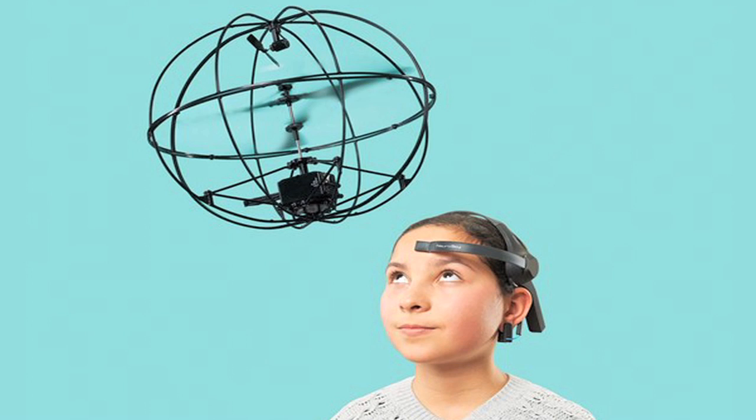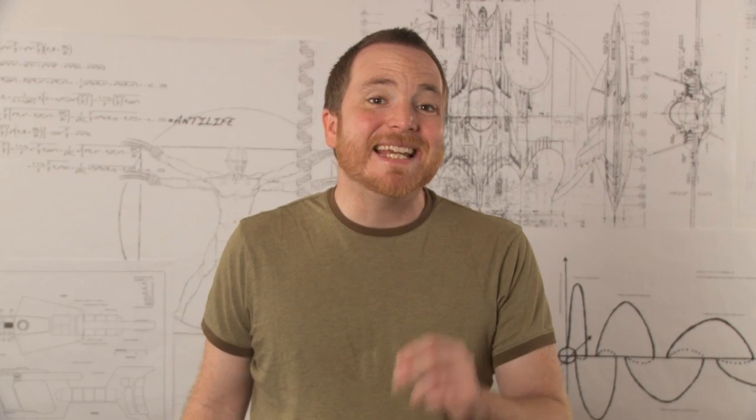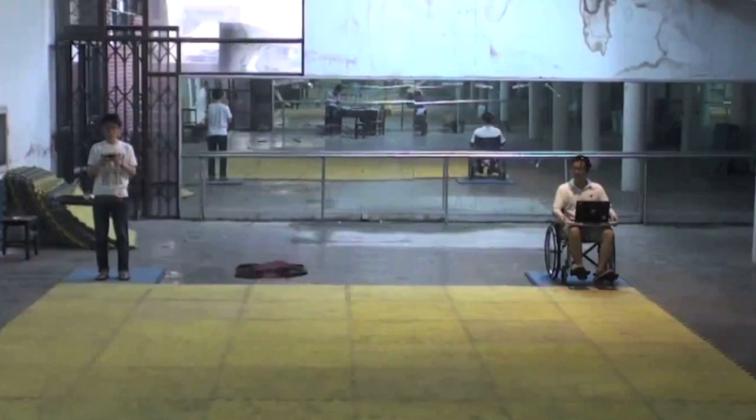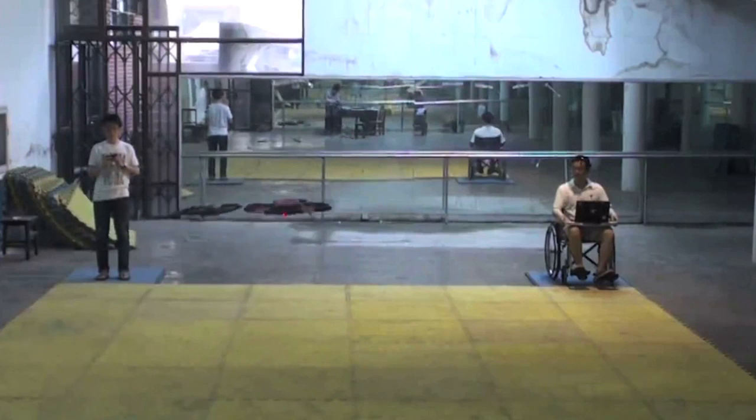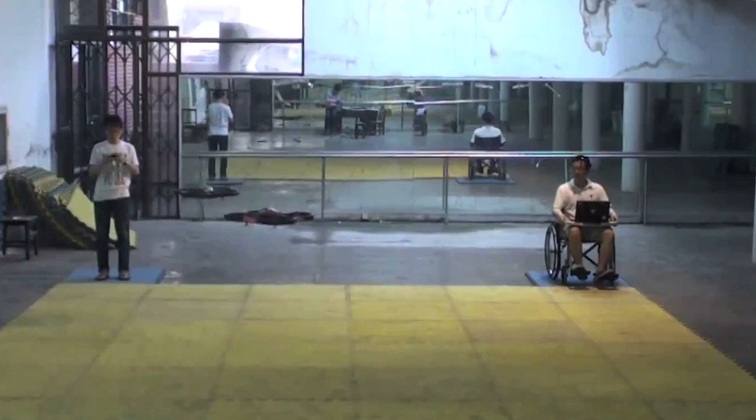We now have BCIs that allow paralyzed people to walk simply by thinking about it. But it's not just artificial limbs that BCIs allow us to control. We can also command drones. Using an EEG headset, we can transmit our thoughts over WiFi and manipulate flying drones with a great deal more precision than we ever could with a joystick.